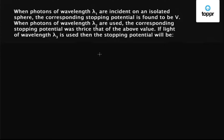Let's take a question on modern physics. When photons of wavelength lambda 1 are incident on an isolated sphere, the corresponding stopping potential is found to be V. When photons of wavelength lambda 2 are used, the corresponding stopping potential becomes twice of the above value. If light of wavelength lambda 3 is used, then the stopping potential in that case will be... So let's use the relation of stopping potential.